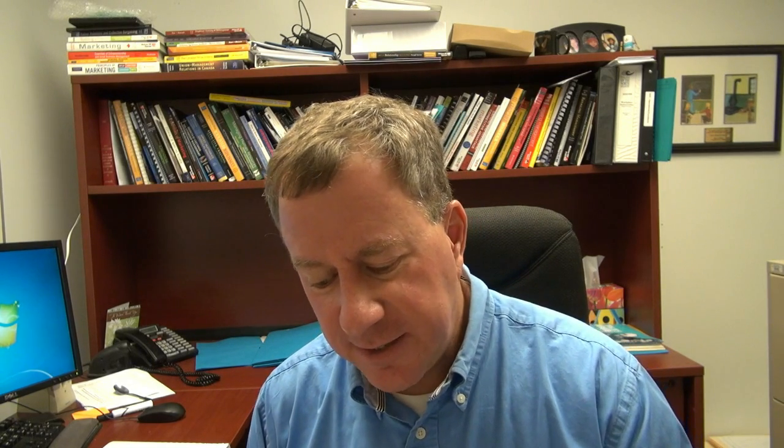We also have scientifically contrived observations, where we set up a little scenario. You've seen TV shows like America's Funniest Videos where they contrive a situation — for example, gluing a quarter to the floor to watch people pick it up. That's a form of contrived observation. People acting in a role play is also a form of contrived observation.